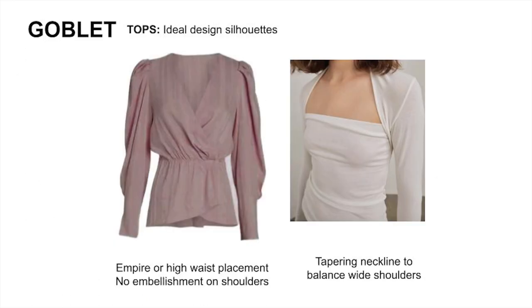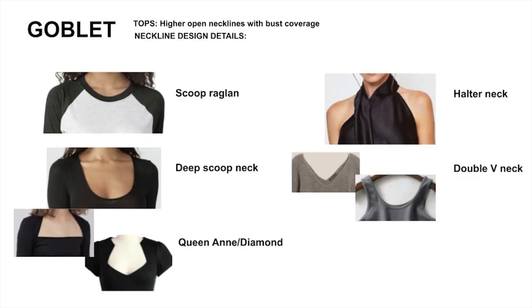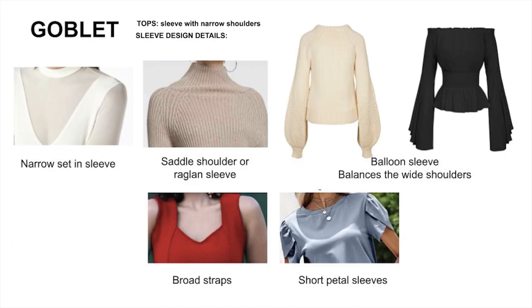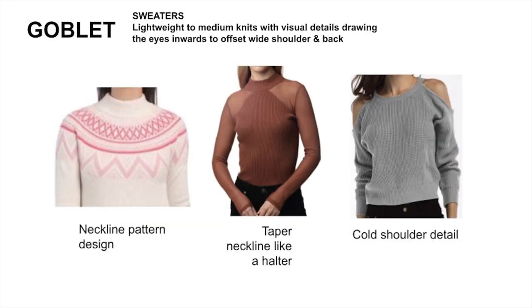For the goblet's tops, here are two key design elements: the top highlights the smallest part of the upper body, and the neckline needs to offset the wide shoulders. Do not put any embellishment onto the shoulders. Here are some examples of necklines and sleeve details to offset wide shoulders. For sweaters, make sure they're light to medium weight knits.